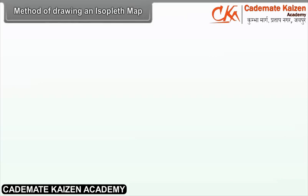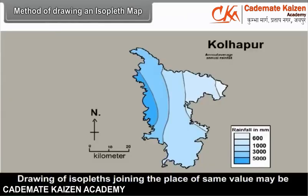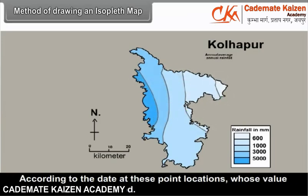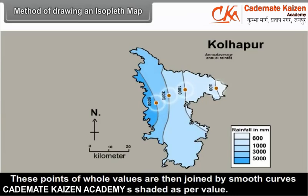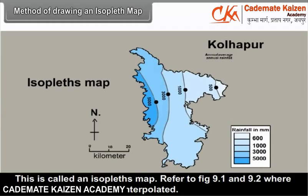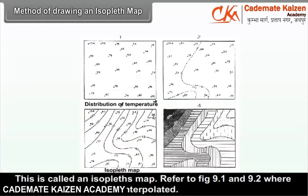Methods of drawing an isopleth map: Drawing isopleth lines joining the places of the same value may be called interpolation. To draw an isopleth map, we treat a base map with point locations of different places. According to the data at these point locations, values are interpolated. These points of whole values are then joined by smooth curves with the intervening places shaded as per the value. This is called an isopleth map. Refer to figures 9.1 and 9.2 where temperature values are interpolated.